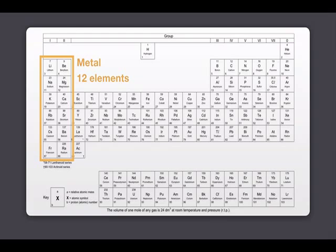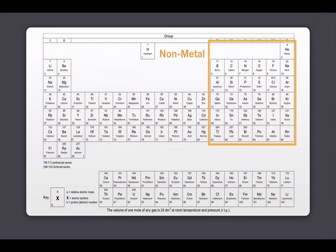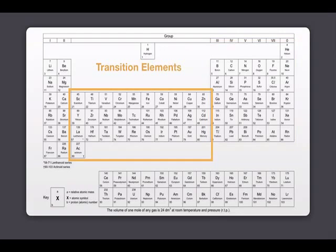The second block is non-metal elements. There are 31 non-metal elements. The third block is the transition elements. There are 31 transition elements.